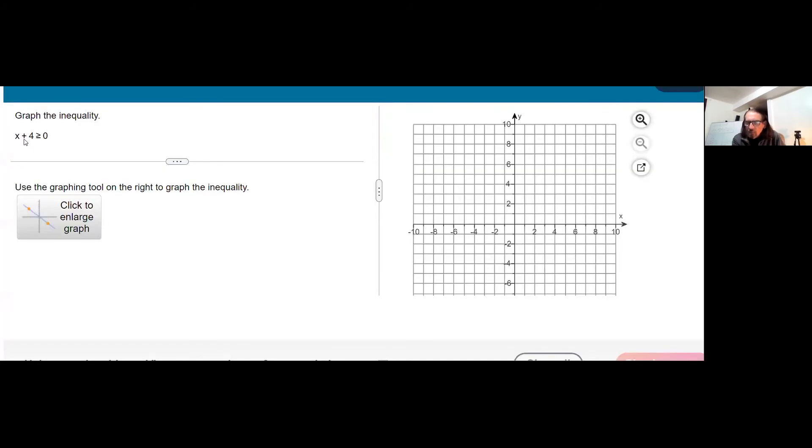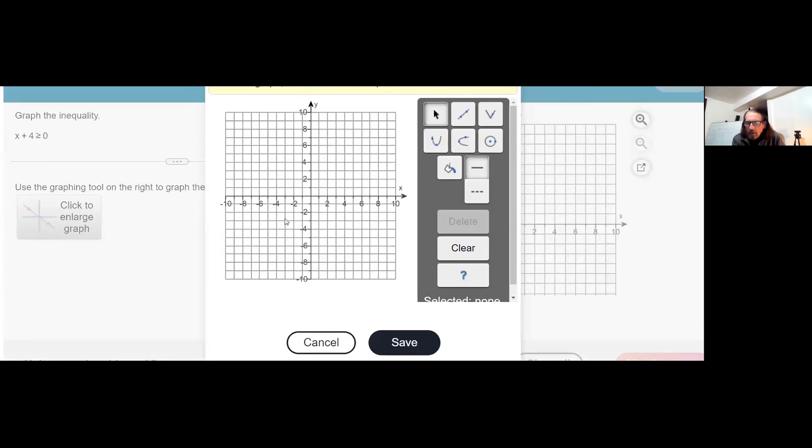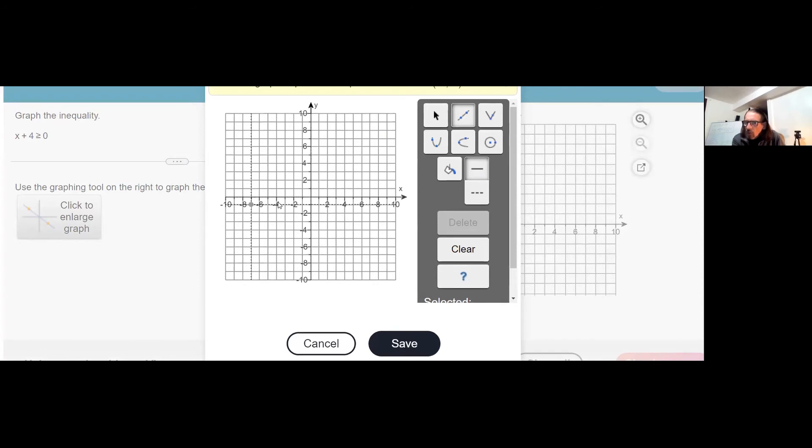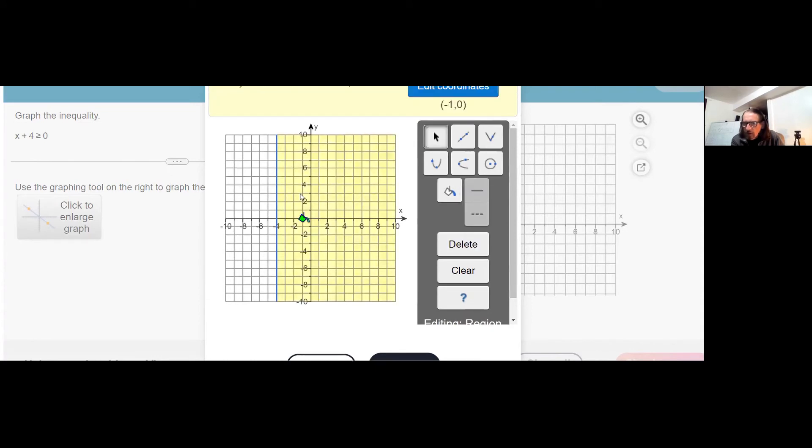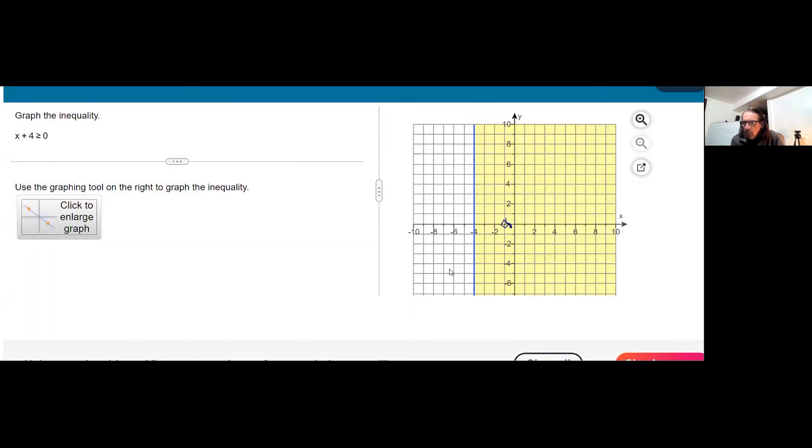If we rewrite this by subtracting 4 to have x greater than or equal to negative 4, the boundary line is when x is exactly equal to negative 4, and that's going to be vertical. Because we've got the or equal to, keep that solid. I could plot any two points with an x coordinate of negative 4, connect with that solid line because of the or equal to. And in the case of horizontal and vertical lines as opposed to diagonal, it's easier to tell. Things over here are going to be where we have an x coordinate greater than negative 4. And so that's good.